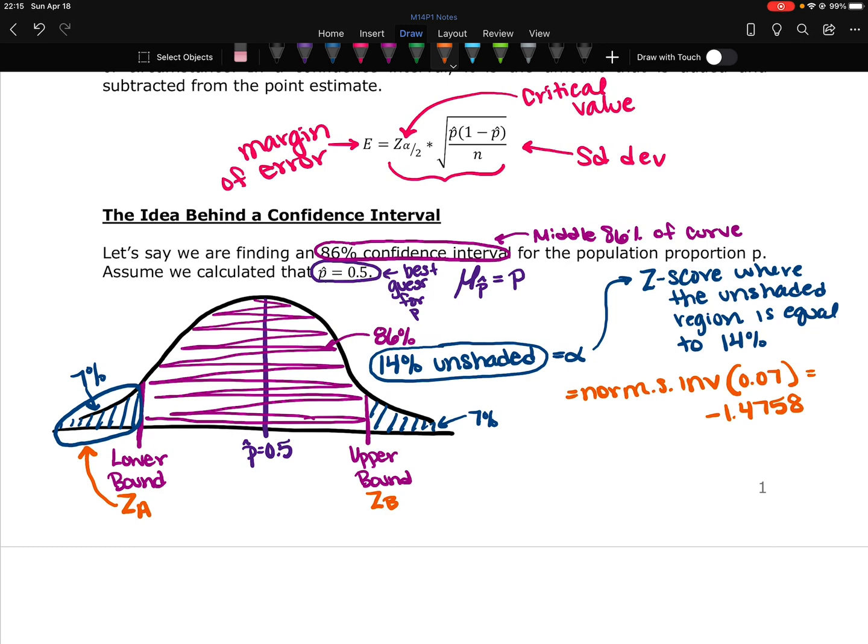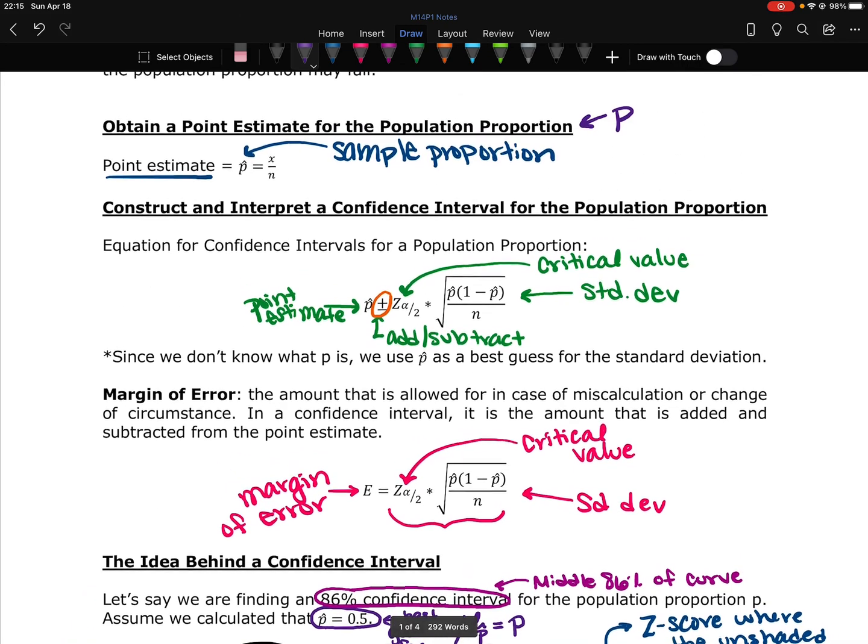But then the result from the confidence interval is an estimate on where the population proportion is. So we do all this math, and the result is an estimate of where the population proportion may fall. Somewhere in between those two numbers. We don't know where exactly, but it's somewhere in between those two numbers. So this is the idea behind a confidence interval. And these are the two equations that we're going to use, or rather three equations, if you include the point estimate equation, that we're going to use in our calculations of these confidence intervals.